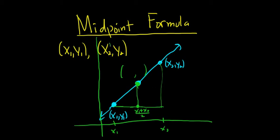Likewise, we can do the same thing with the y's, right? If we take the average of y2 and y1, that should give us the middle y value, middle y coordinate.